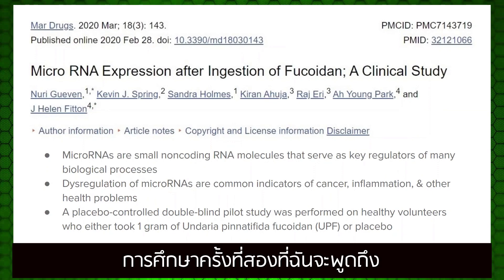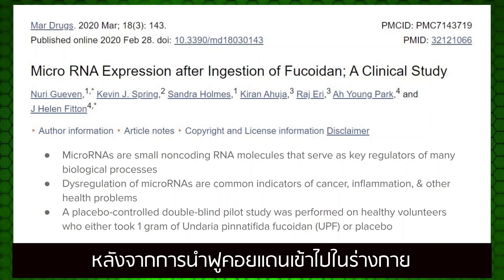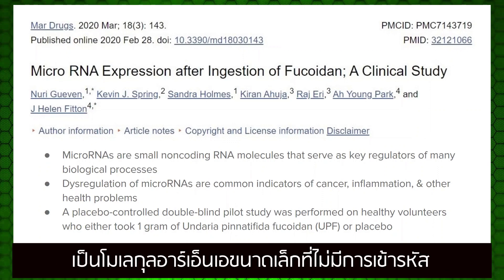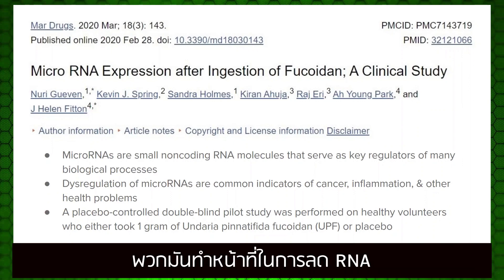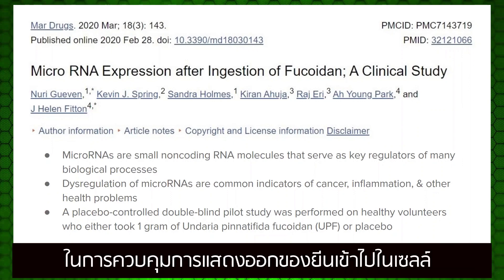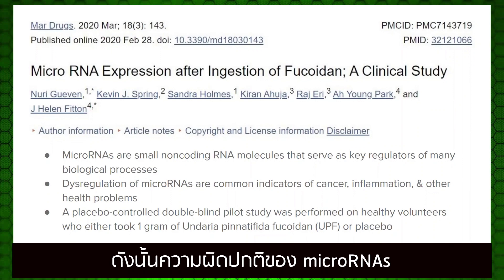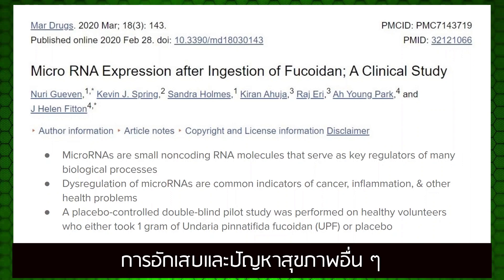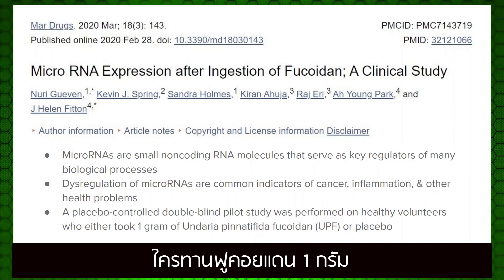The second study I'll be talking about was also published in 2020, and it is a microRNA expression after ingestion of Fucoidan, a clinical study. MicroRNAs are small non-coding RNA molecules that serve as key regulators of many biological processes, functioning in RNA silencing and post-transcriptional regulation of gene expression. MicroRNA is involved in the normal functioning of eukaryotic cells, so dysregulation of microRNA has been a common indicator of cancer, inflammation, and other health problems. This is a placebo-controlled double-blind pilot study performed on healthy volunteers who either took one gram of Fucoidan or one gram of a placebo.